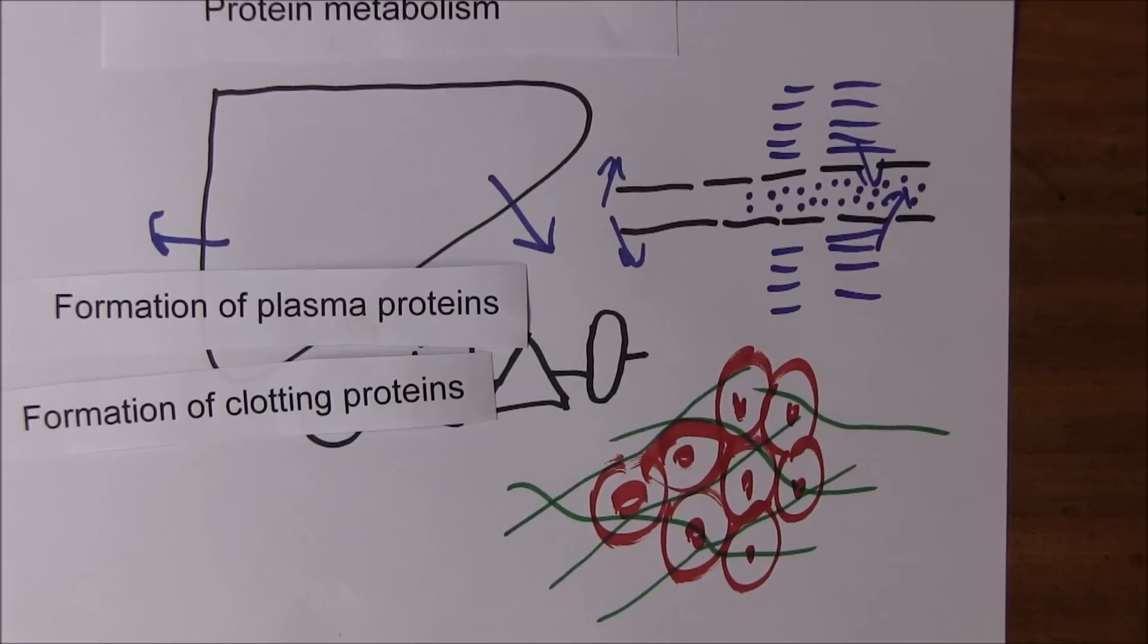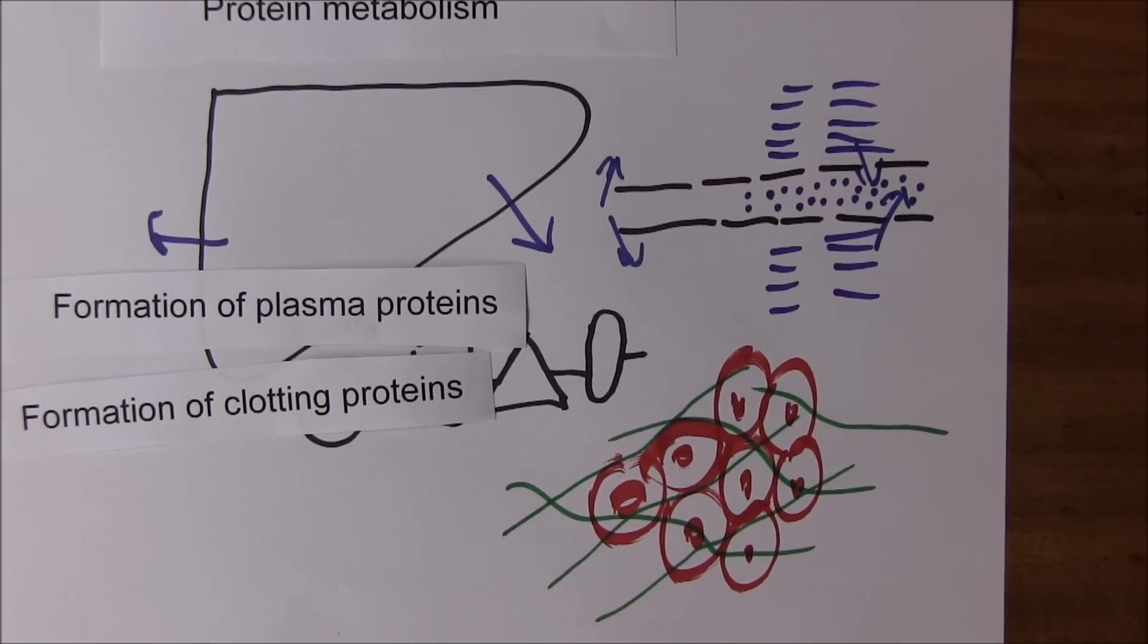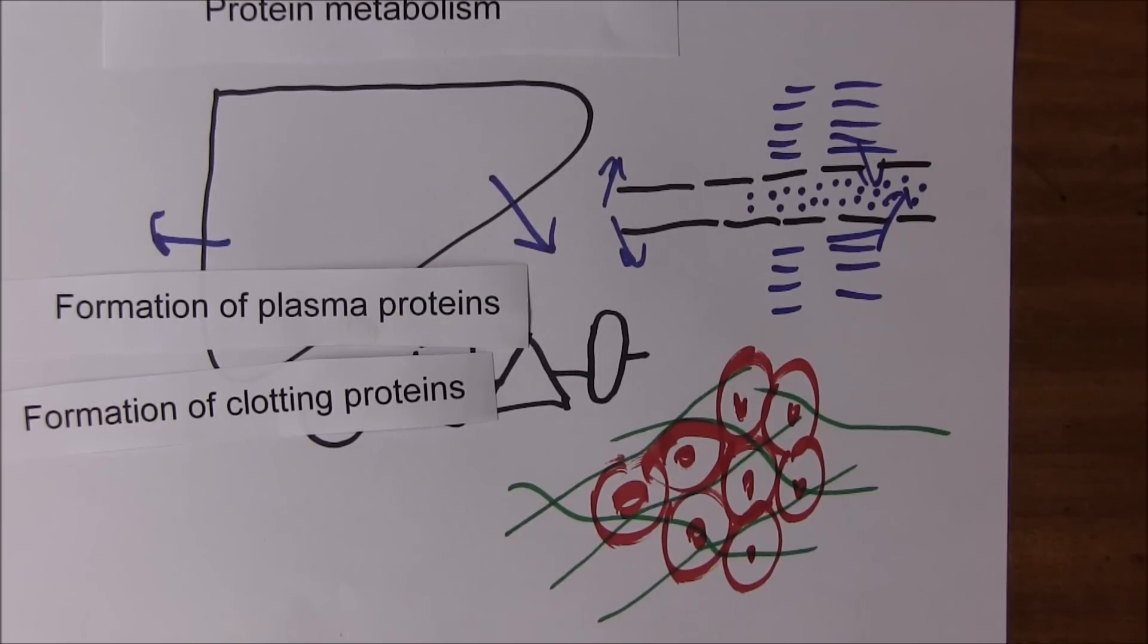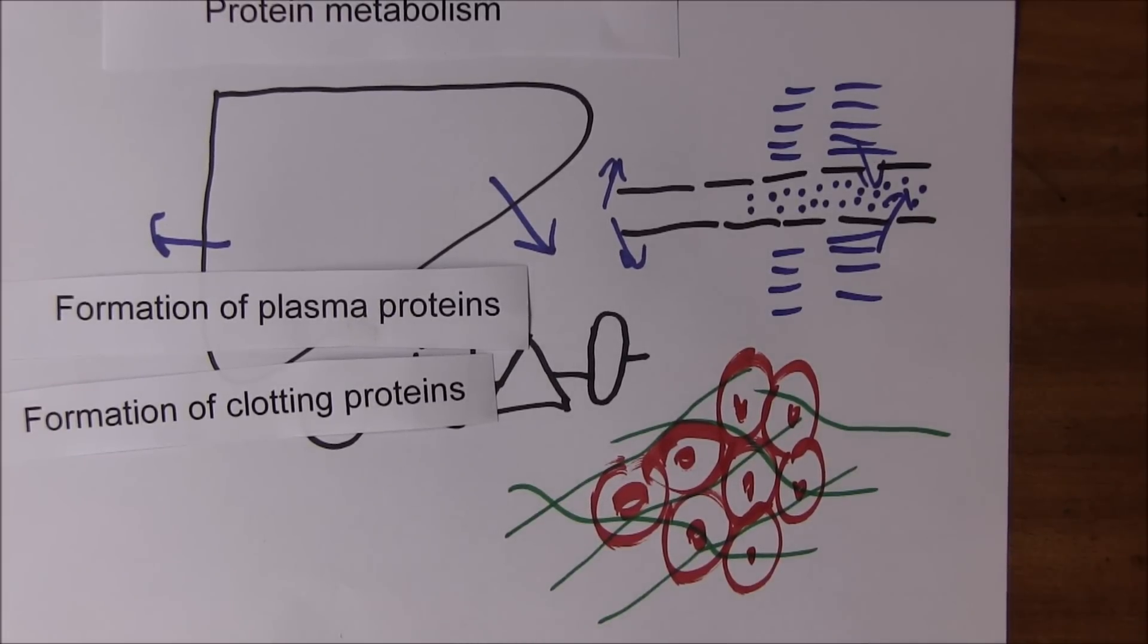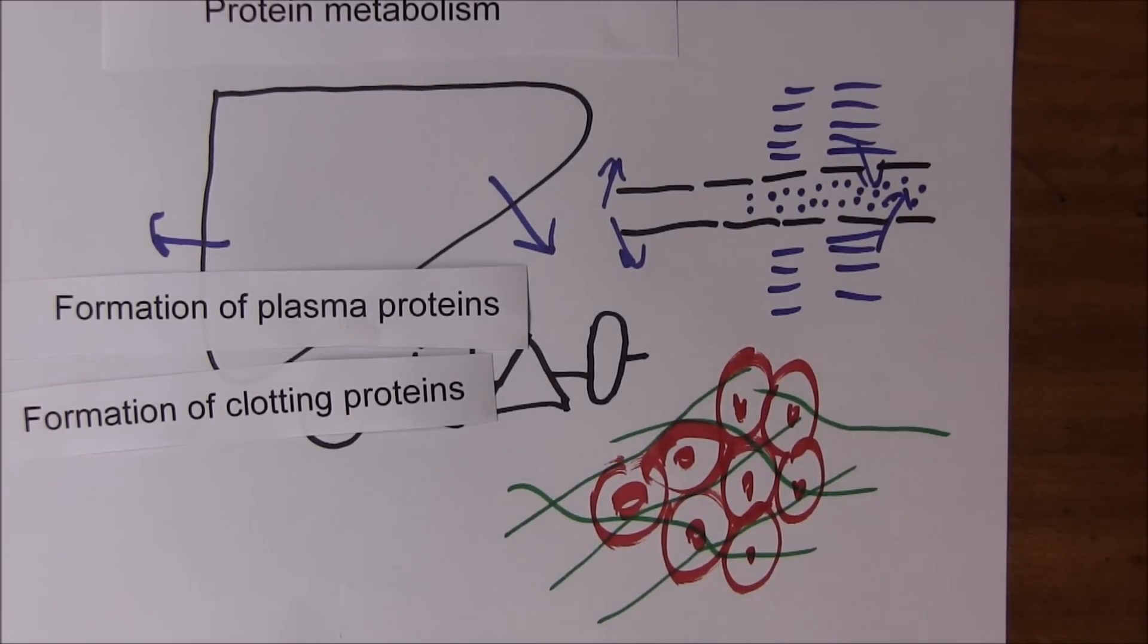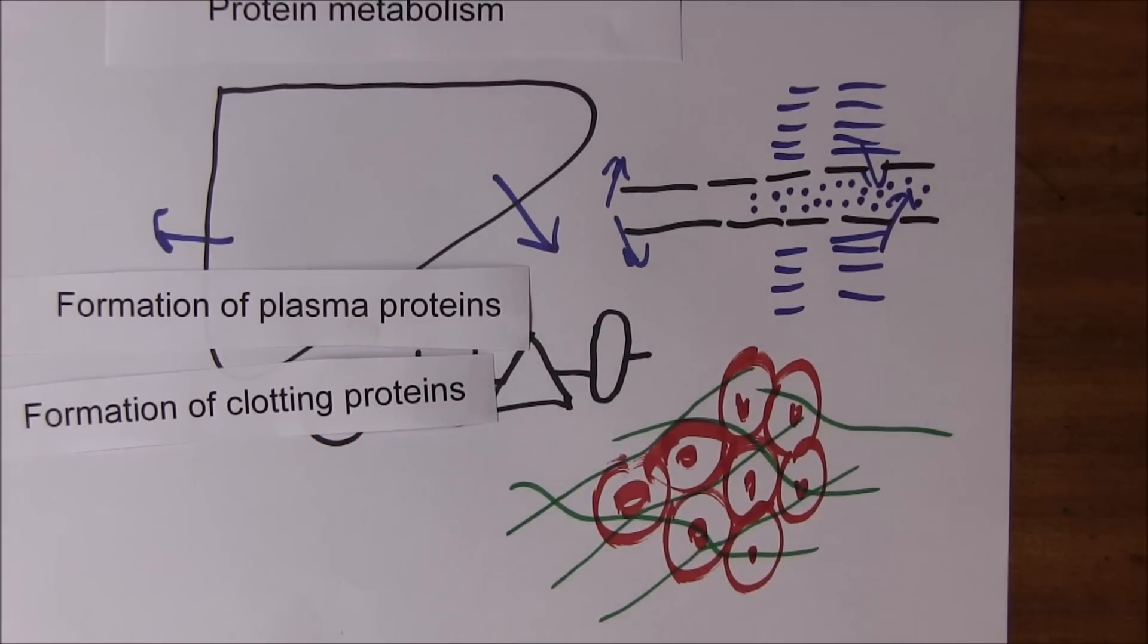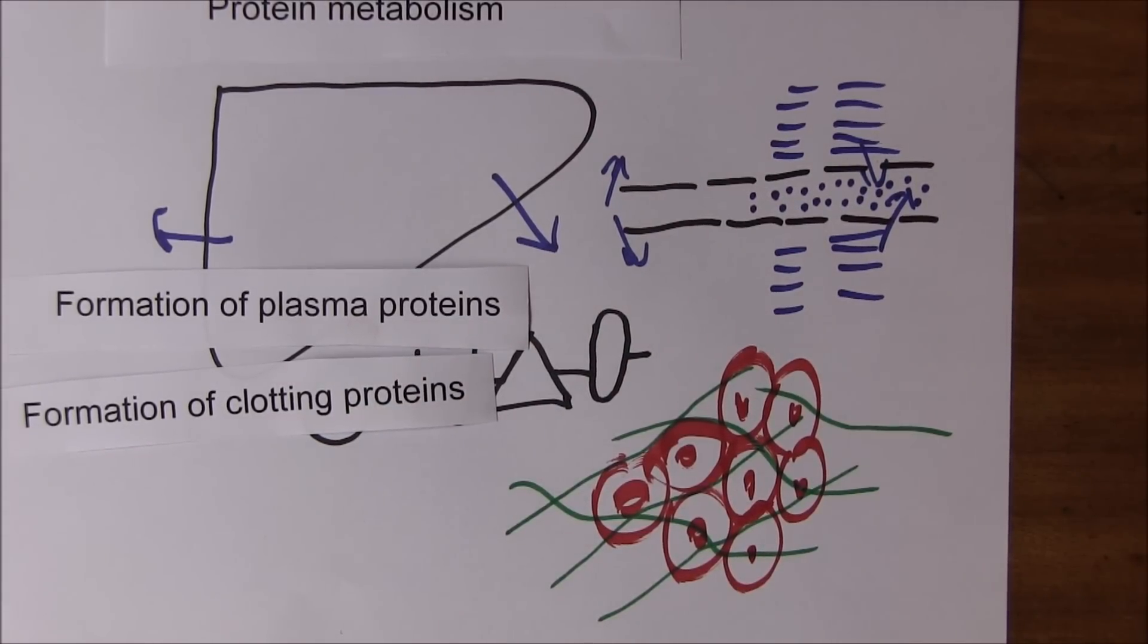If liver function is compromised, production of these plasma clotting proteins is going to be reduced and this rapidly leads to hemorrhagic problems as patients are no longer able to form blood clots. Patients with liver failure can have contusions and bruises and hemorrhagic problems because they lack these clotting proteins.